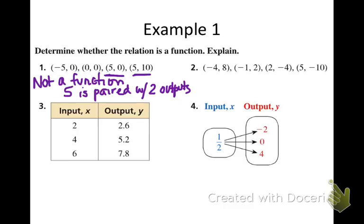Looking at number 2, the inputs — negative 4, negative 1, 2, and 5 — are all different. The outputs are different. You could have two different inputs going to the same output and that would still be a function, even though that doesn't apply to this case. Each input is paired with distinctly different outputs, so this is a function. It's a function because every input has exactly one output.